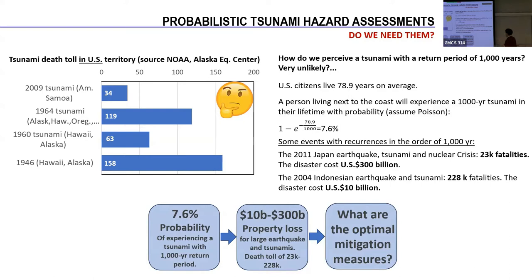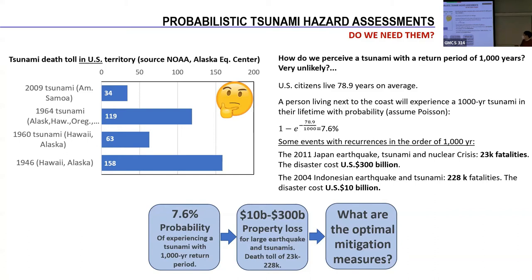If we adopt a very simple Poisson model and consider the average age of a person living in the U.S., which is about 79 years, we can see that the probability of experiencing one event with a recurrence of 1000 years is actually 7.6%. That percentage is very similar to the probability of contracting a deadly cancer during our lifetime — for example, breast cancer is about 9.6% according to statistics. So we have a significant, non-negligible risk in our lifetime if we are living next to the coast.